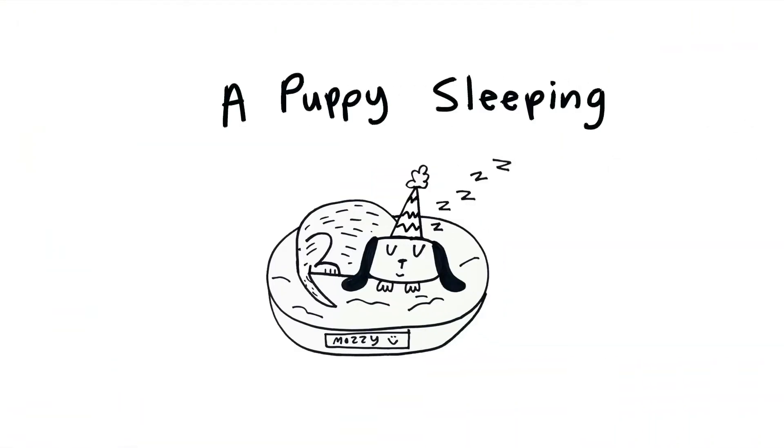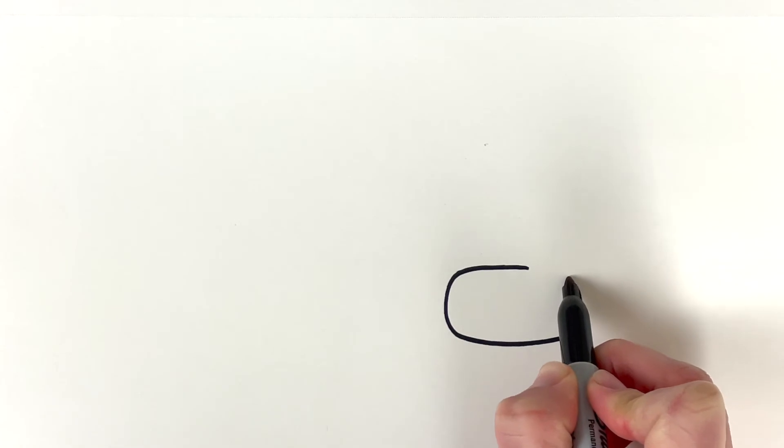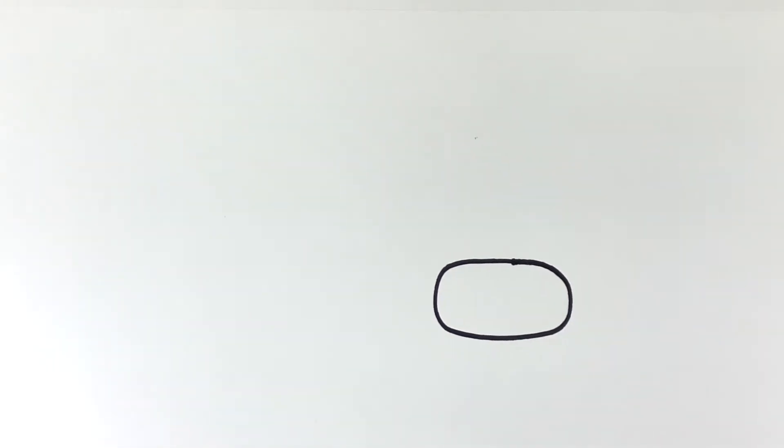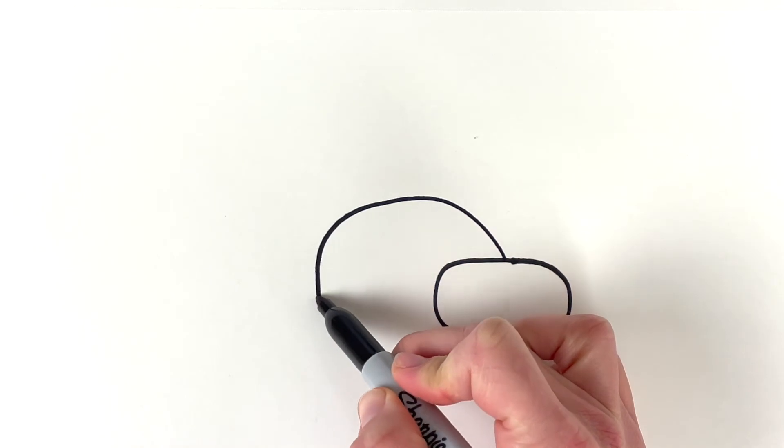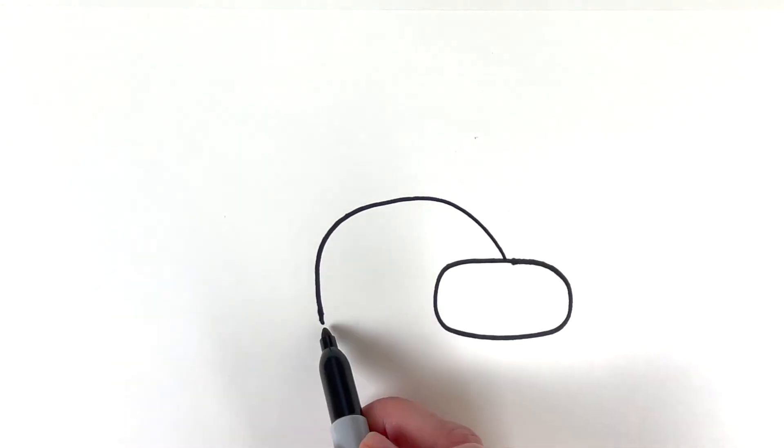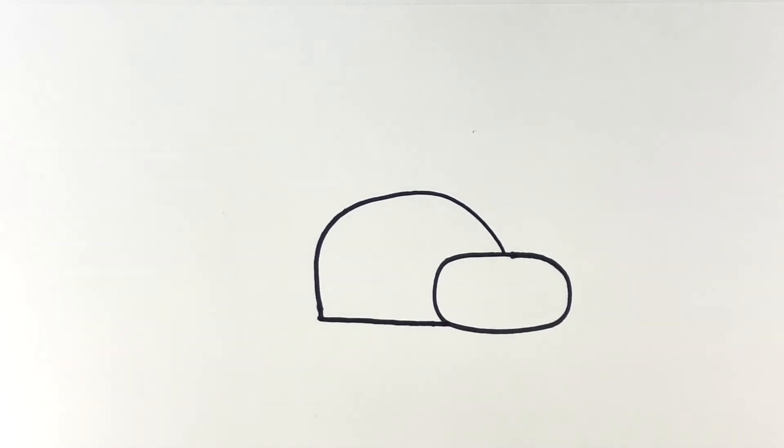Now I want to draw a puppy sleeping. So I'll start the head like that. Then the body will go up, come around, and kind of go and meet this line here.